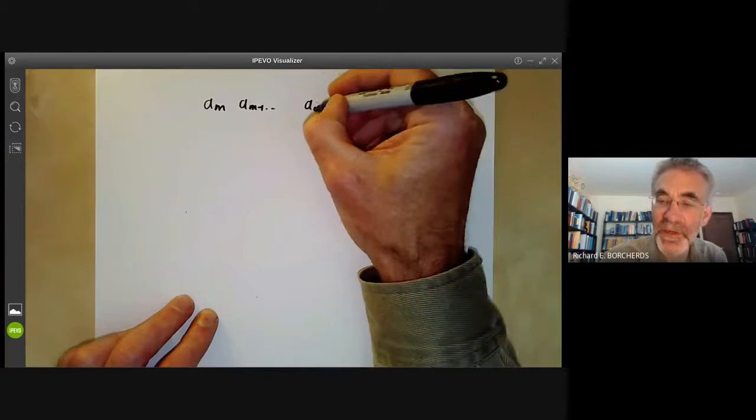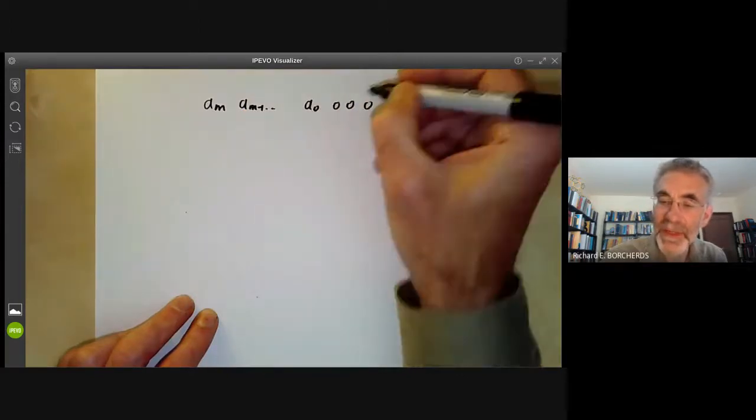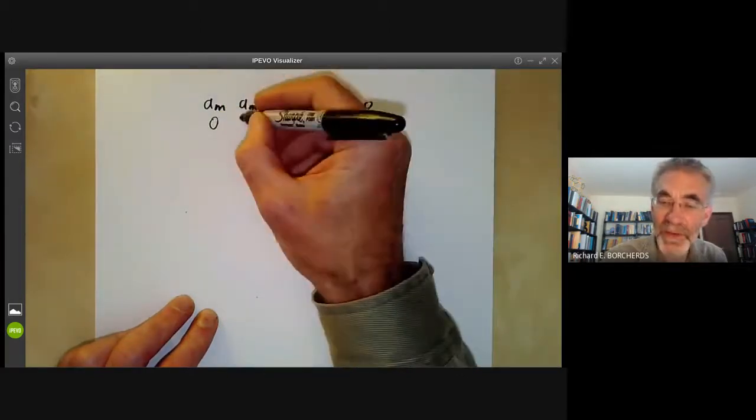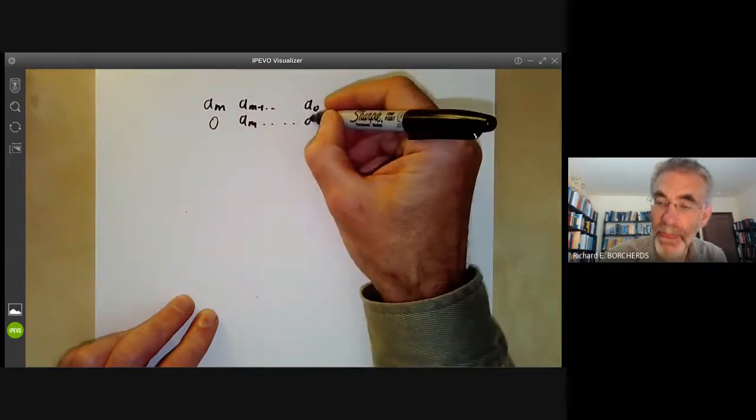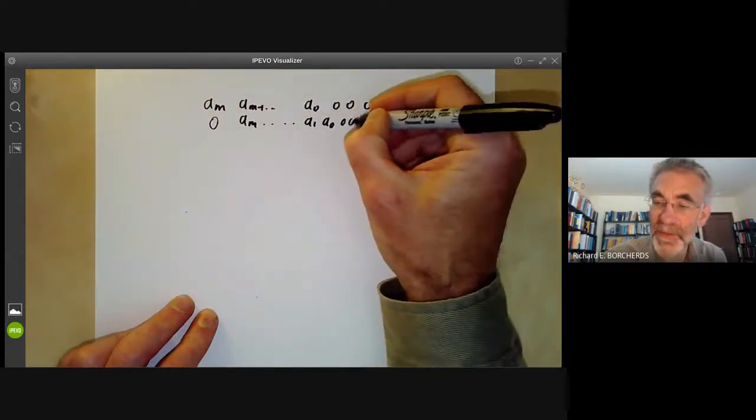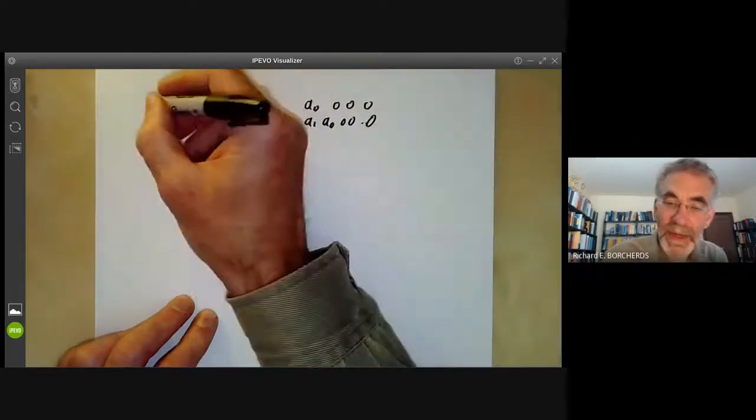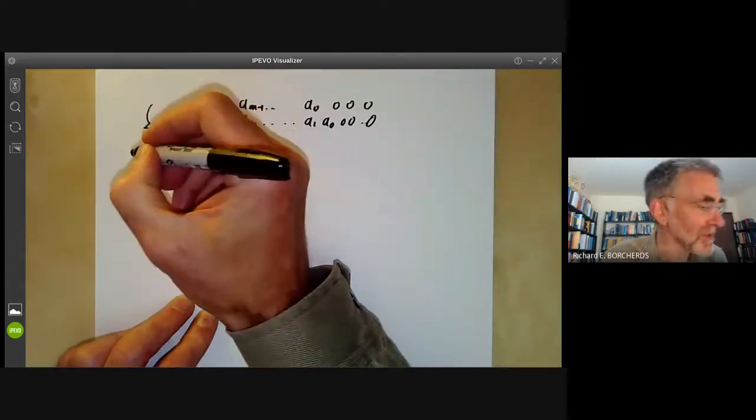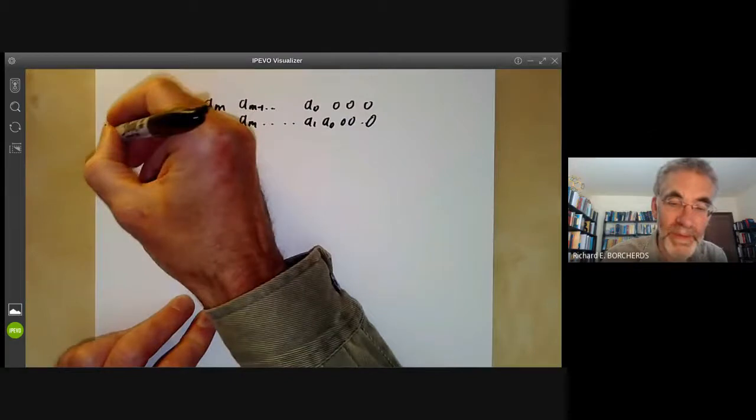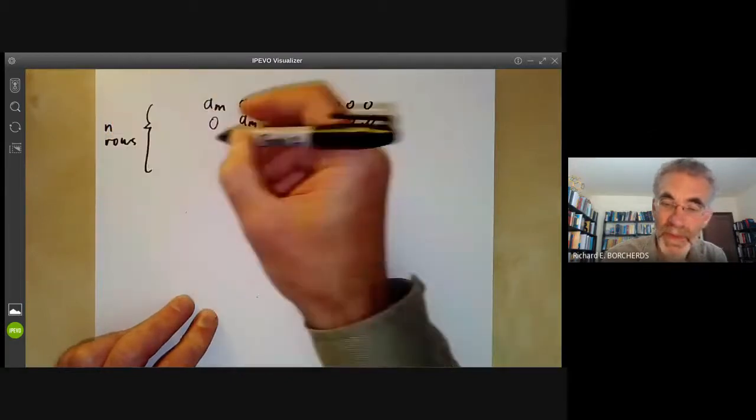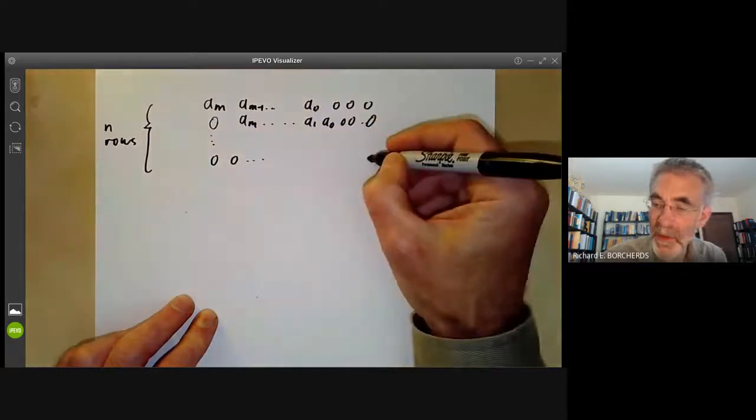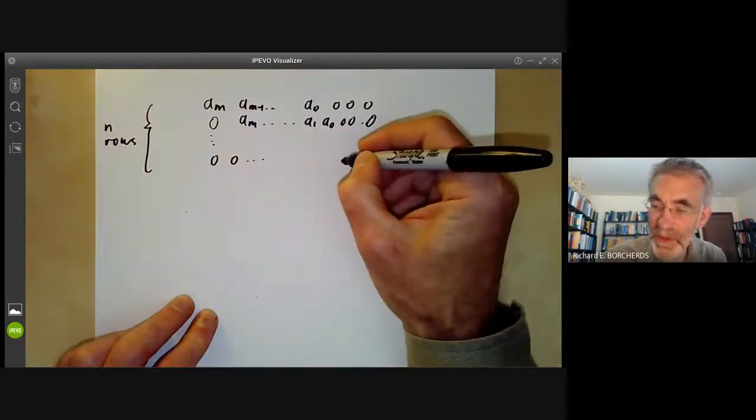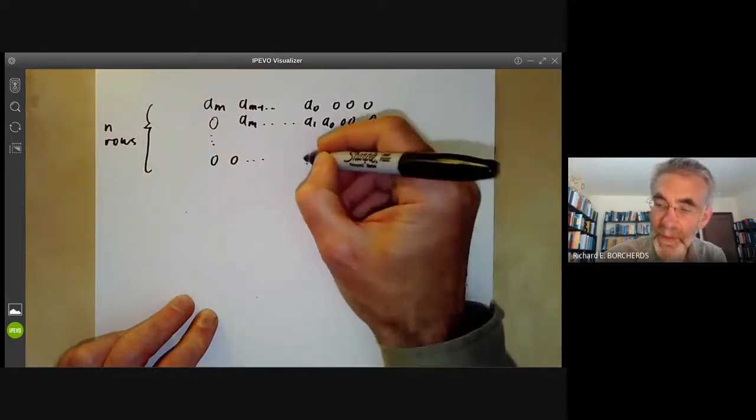It looks like this. First of all, you write down the coefficients of f, and then you add a certain number of zeros. And then you write down the coefficients of f again, only shifted by one. And then a certain number of zeroes. And all together, we're going to do this n times. So we go all the way down to here, we get zero, zero. And then am, a1 up to am.